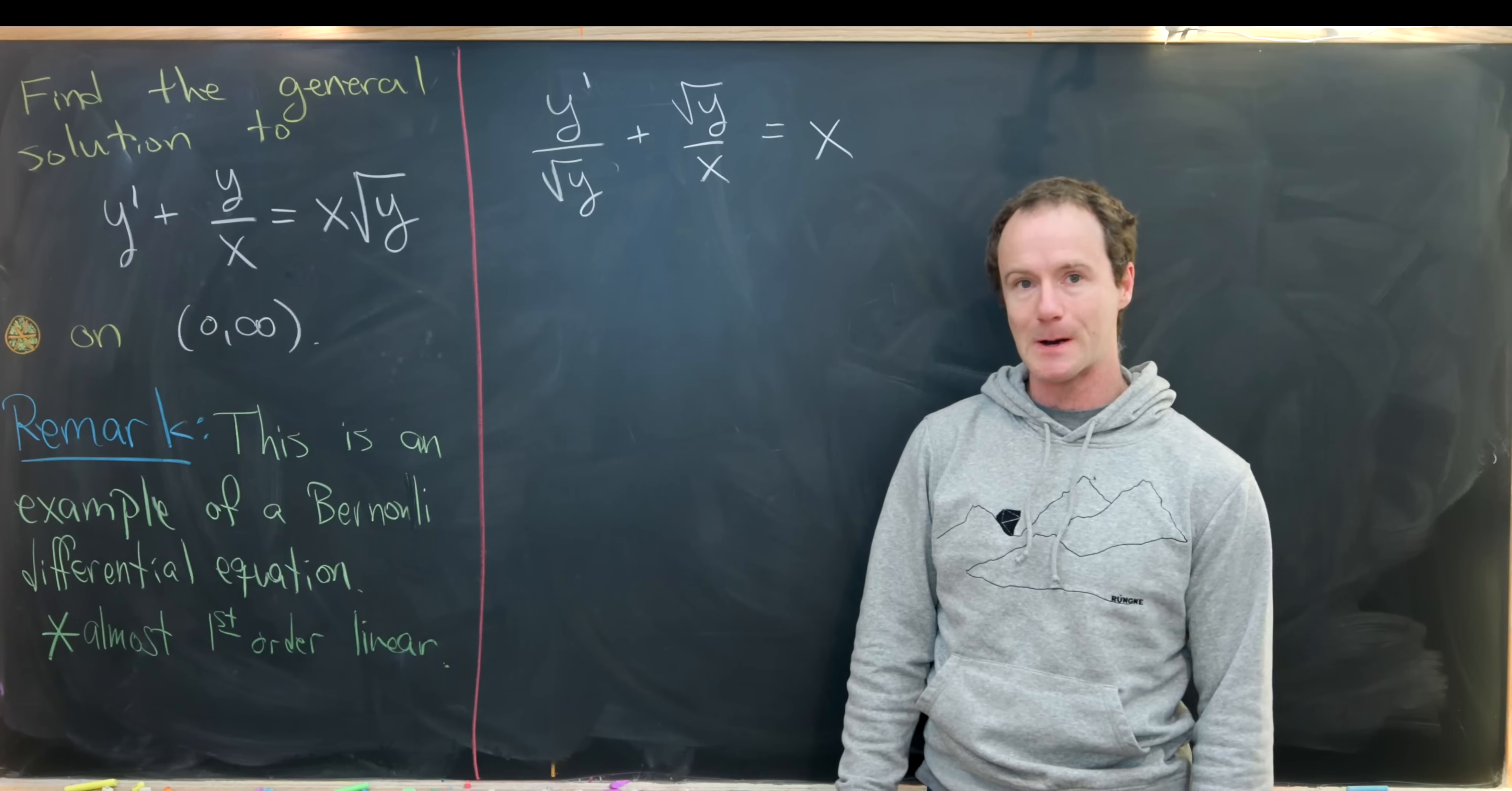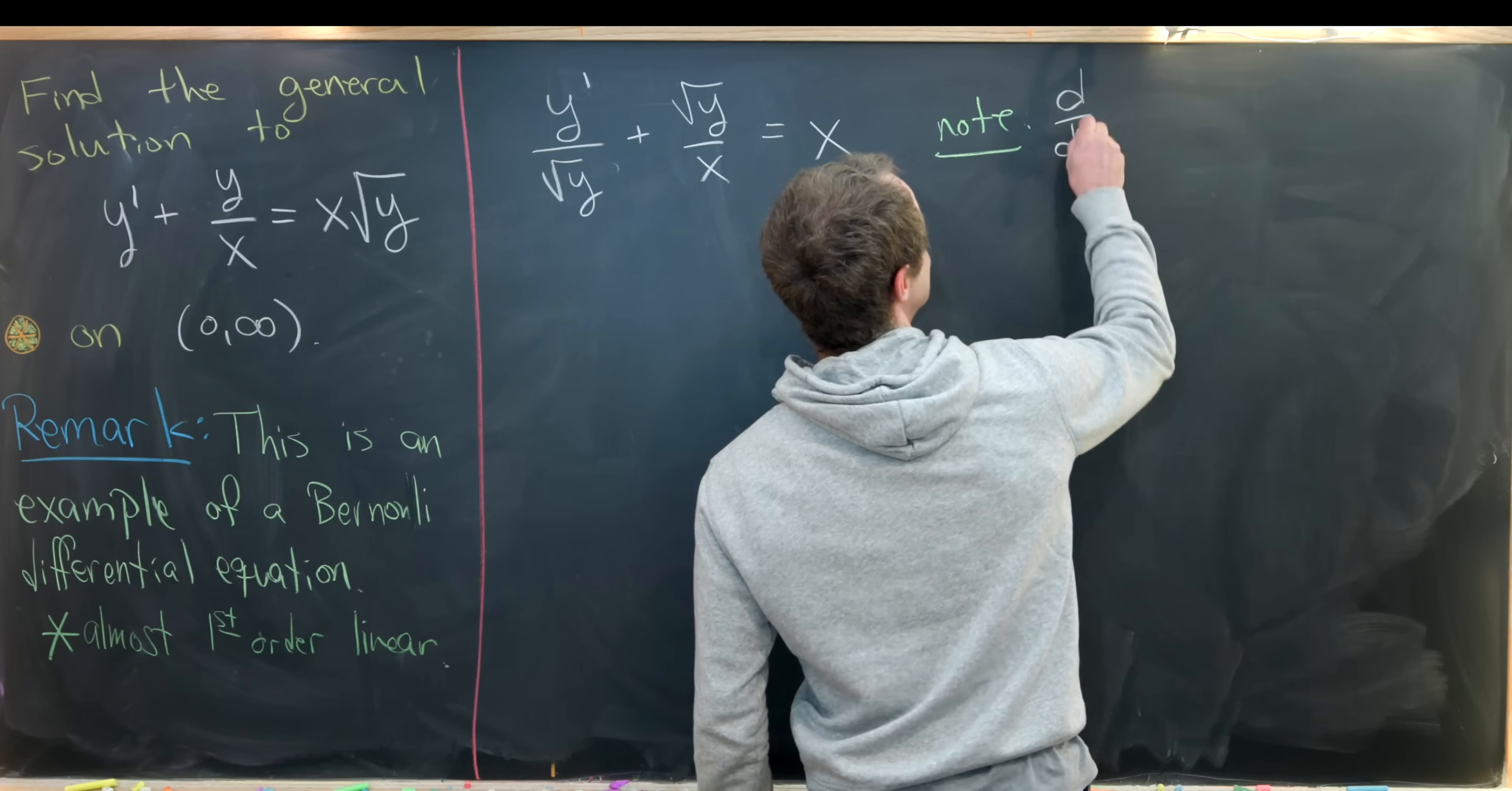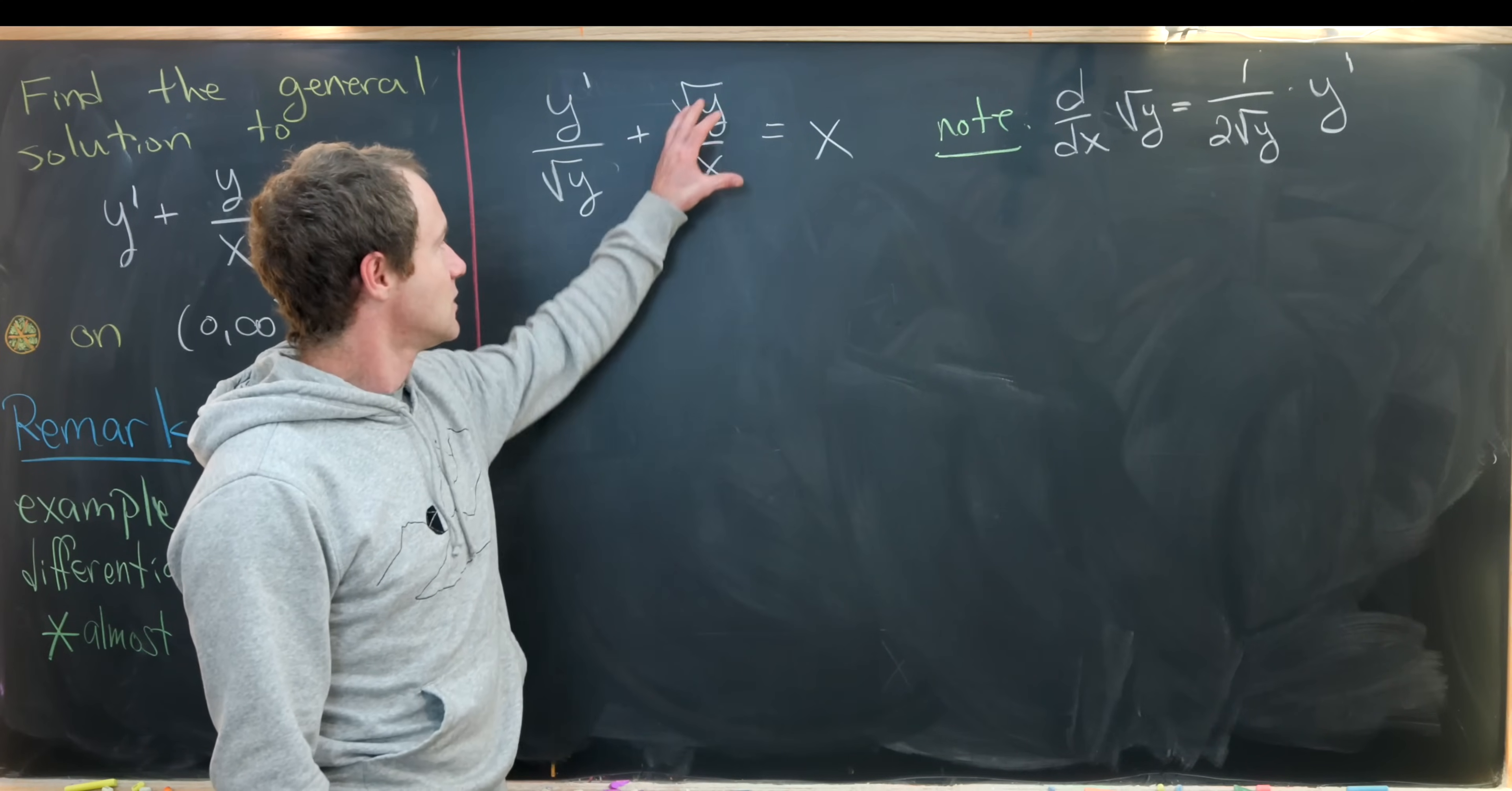Now let's recall that when you take the derivative of a square root function, it sends the square root downstairs. That's exactly what's happening right here. To be more specific, if we take the derivative with respect to x of the square root of y, we get one over two times the square root of y times y prime, where that two in the denominator came from the power rule.